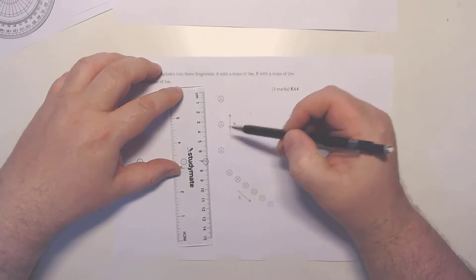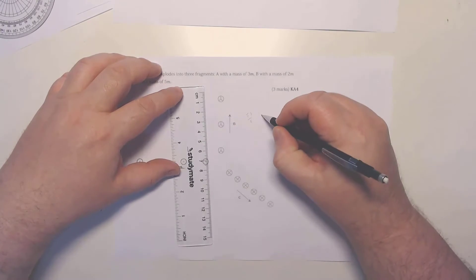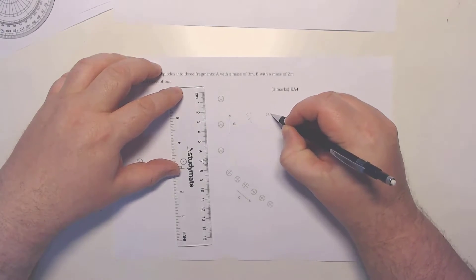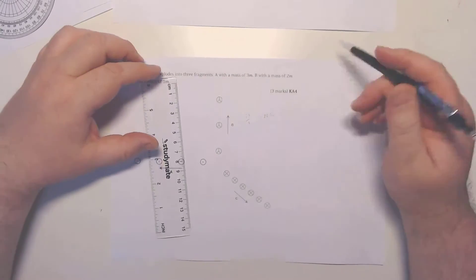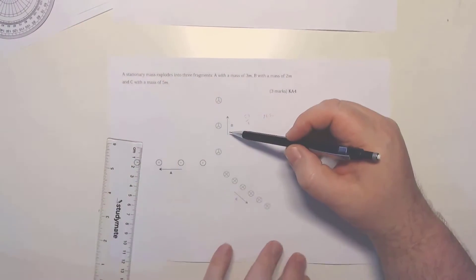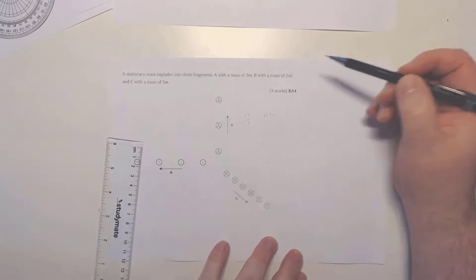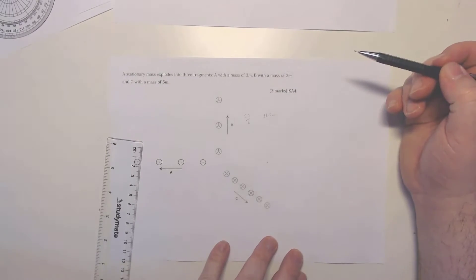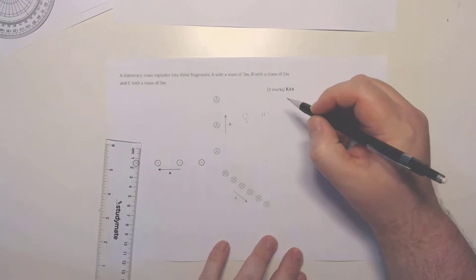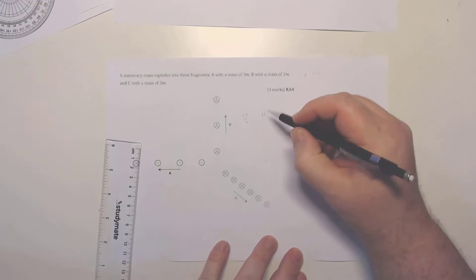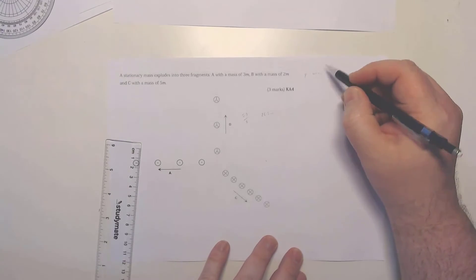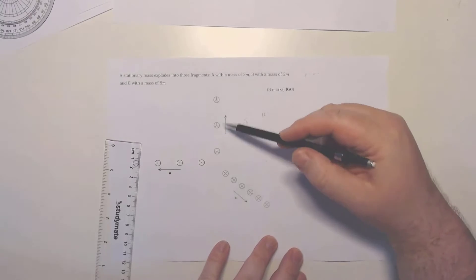There's one, two divisions, so that gives us a separation of 26.5 millimeters per division. Now this is mass B, and mass B has a mass of 2m. Momentum being equal to MV, so that 2 is going to get to the front there.